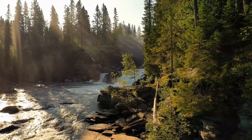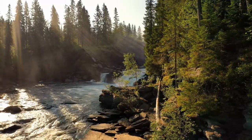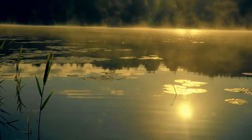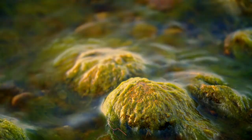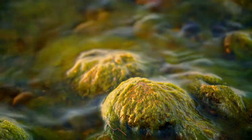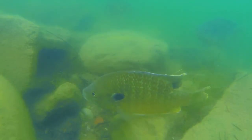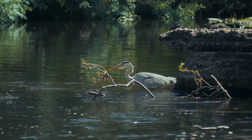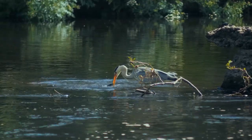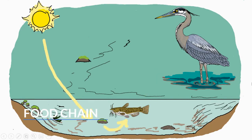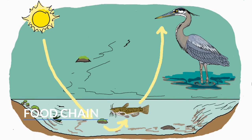But why is this? Different species in an ecosystem are interconnected. For example, let's look at this pond ecosystem. Algae in this pond gets energy from sunlight, this fish gets energy by eating the algae, and this heron gets energy by eating the fish. Together, these species make a food chain.